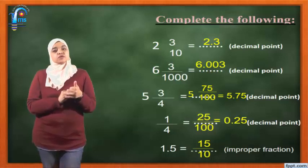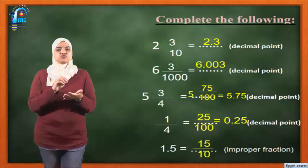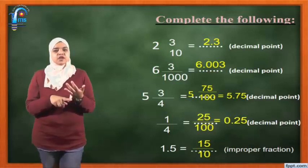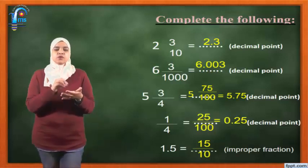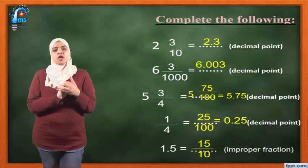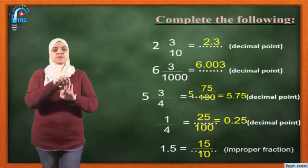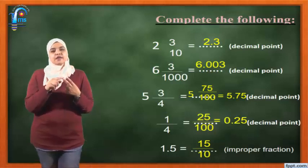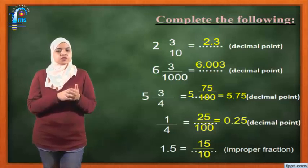6 and 3 over 1000 equals what? I want to write it as a decimal. As we said, to write any fraction as a decimal, the denominator must be 10, 100, or 1000. Here the denominator is 1000. 6 is the whole number so I put it before the decimal. The answer will be 6.003. Why? Because we jump three places, but I only have one digit, so I must put two zeros to jump three places.